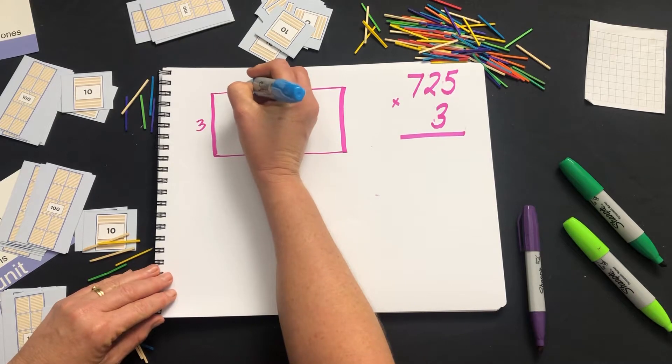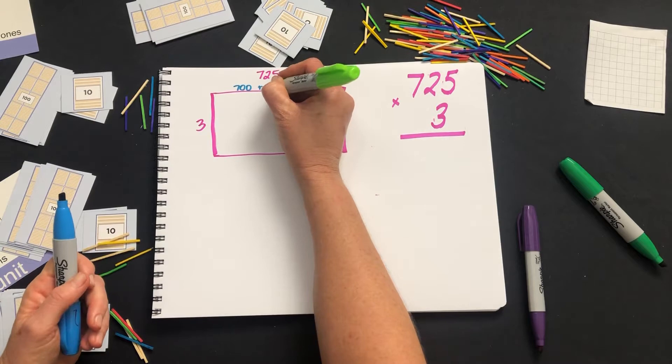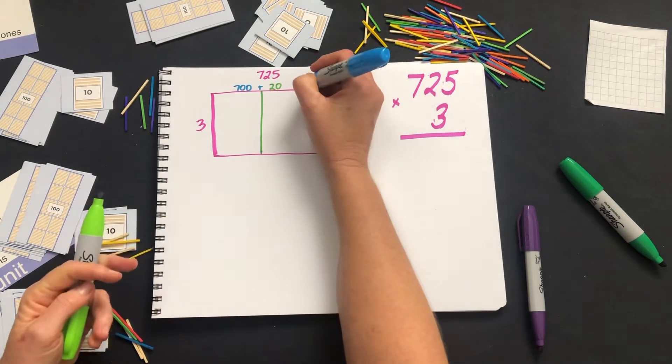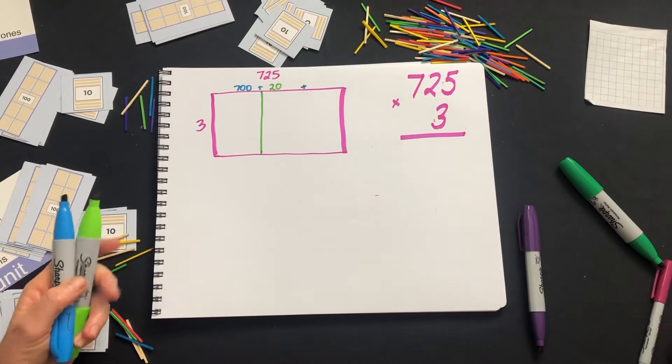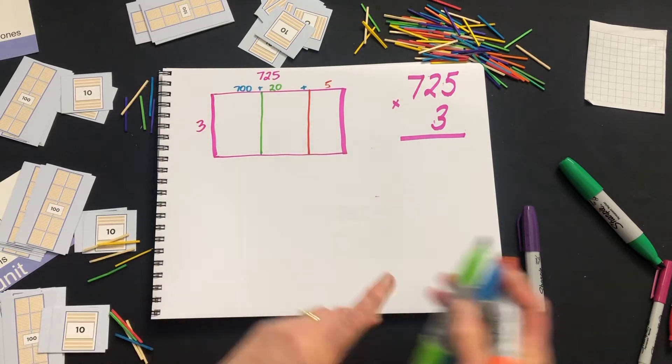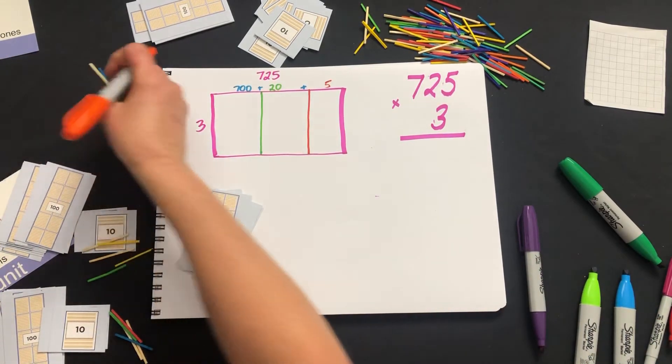So we're going to have 700 plus 20 plus our 5. Partitioning it using place value, just as we had done when we represented it.